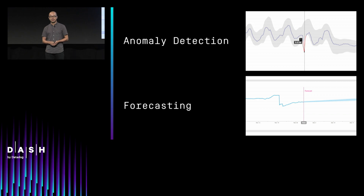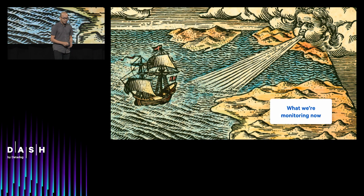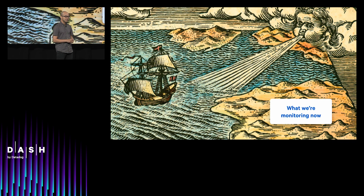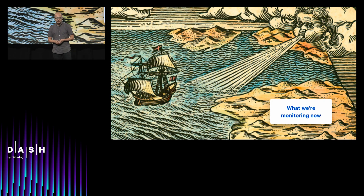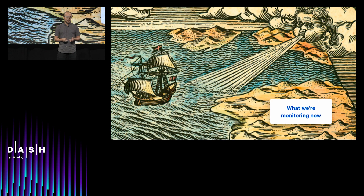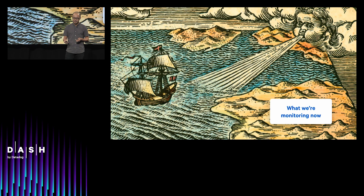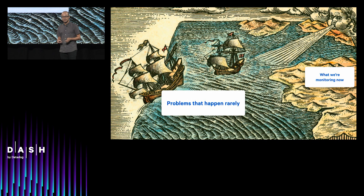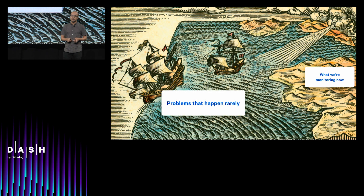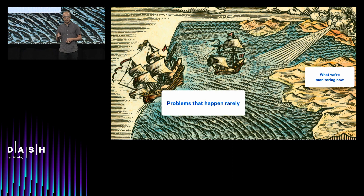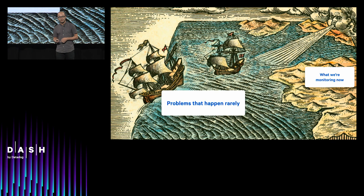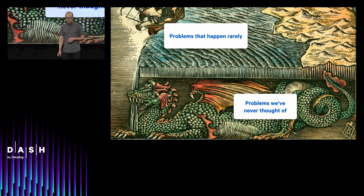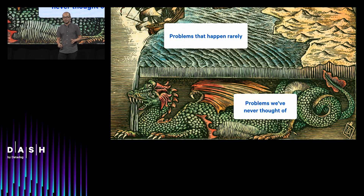How do you know what to monitor? How do you know what to look out for? Monitors you set up yourself reflect the problems that you've encountered in the past, but your systems can fail in so many different ways — any one of which might happen very rarely, but collectively is what keeps your teams up at night. Collecting metrics, traces, and logs might help you figure out what happened after the problem has occurred, but how can you possibly monitor problems you've never even thought of?